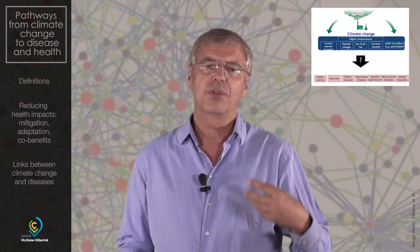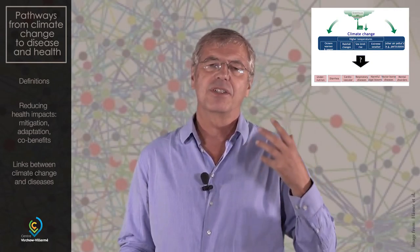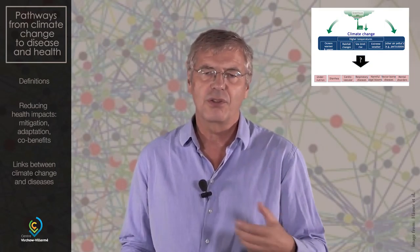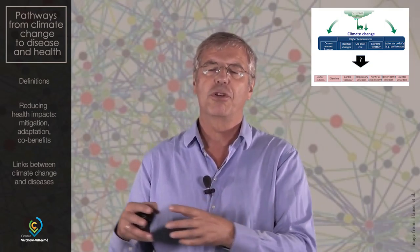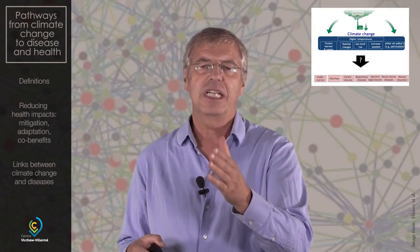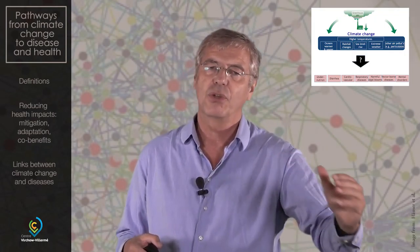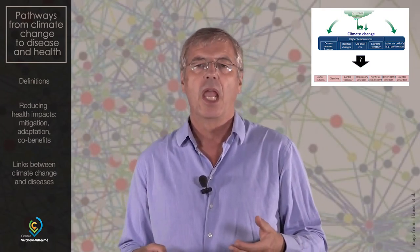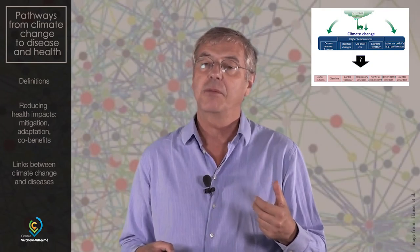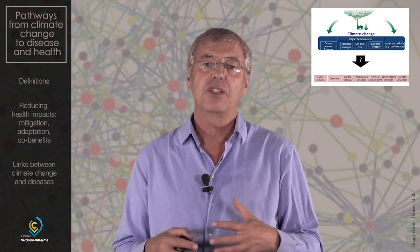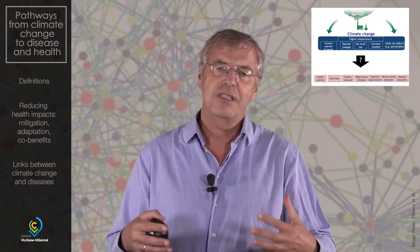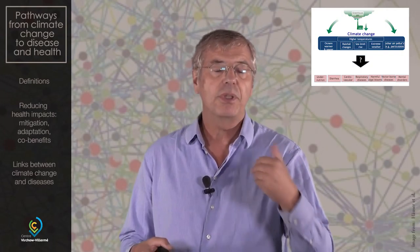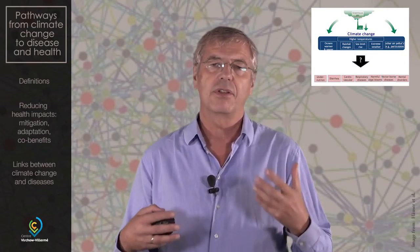The grouped disease categories are: undernutrition — one of the key components — diarrhea, cardiovascular diseases, respiratory diseases, harmful algal blooms — which are linked to cholera and therefore to diarrhea, and occur when oceans warm — vector-borne diseases, and finally mental disorders. So there is quite a range: infectious diseases, non-communicable diseases, and malnutrition. Injuries should have been included in this graph to my taste, but I give you the graph as it is.